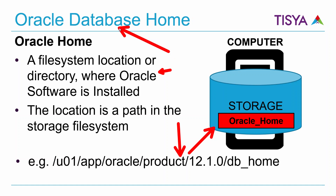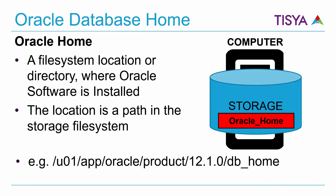Similarly, you could have grid infrastructure software that is installed in its own home. The location or the directory in which you have installed the binaries is called the home for that particular product.